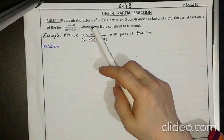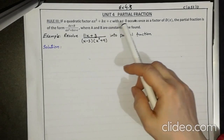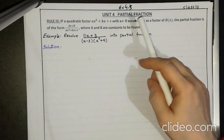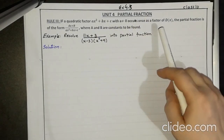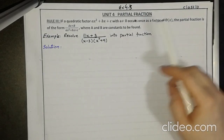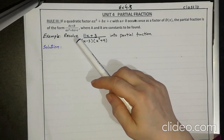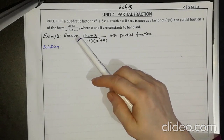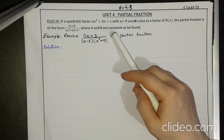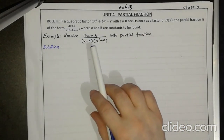Today our topic is the third rule. If a quadratic factor ax² + bx + c, where a is not equal to 0, occurs once as a factor of the denominator, the partial fraction is of the form (Ax + B) over (ax² + bx + c), where A and B are constants to be found.